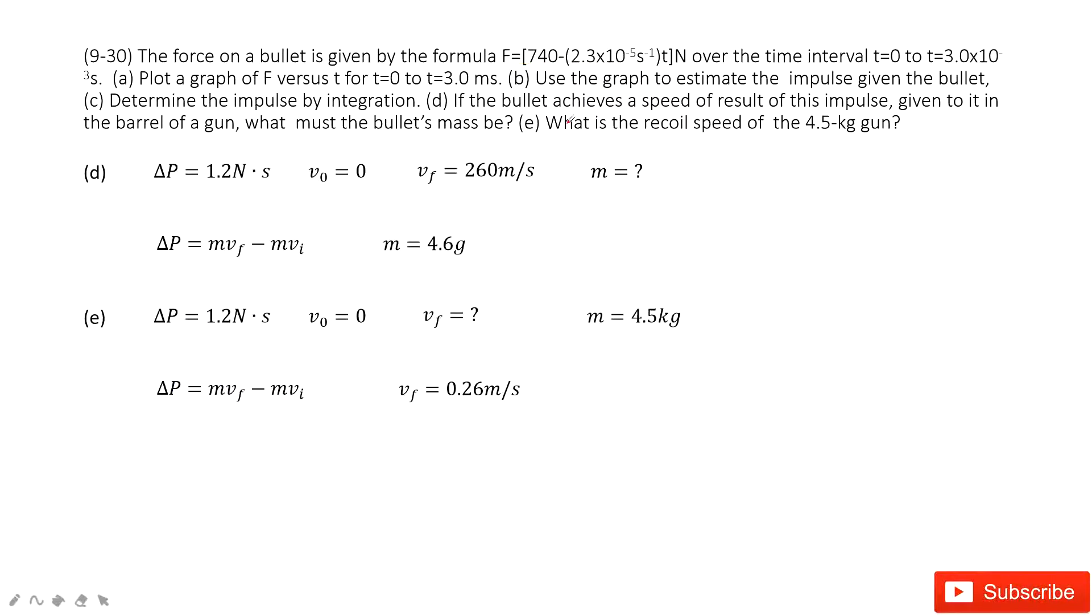The fourth one is if this bullet achieves the speed in the impulse. Given 0.8 in a gun, what must the bullet mass be. So in this one, first, we know the change of the momentum. The impulse is given by previous pictures.